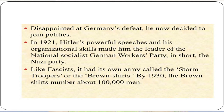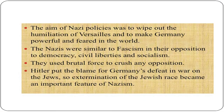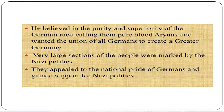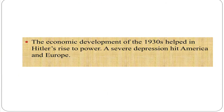By 1930, the Brown Shirts numbered about one lakh men. The aim of the Nazis was to wipe out the humiliation of Versailles and to make Germany powerful and feared in the world. The Nazis were similar to fascism in their opposition to democracy, civil liberties and socialism, and used brutal force to crush any opposition. Hitler put the blame for Germany's defeat in war on the Jews, so extermination of the Jewish race became an important feature of Nazism. He believed in the purity and superiority of the German race, calling them pure-blood Aryans, and wanted the union of all Germans to create a greater Germany. The economic depression of the 1930s helped in Hitler's rise to power, as a severe depression hit America and Europe, leaving almost 8 million workers in Germany unemployed.